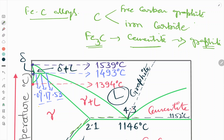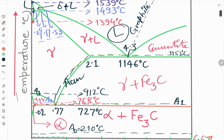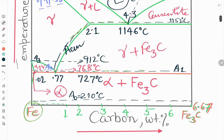The phase diagram shows iron and iron carbide as the two components. In cast iron, carbon is present either as graphite or as cementite. To denote this possibility, the figure has dotted phase boundaries, which represent the corresponding graphite equilibrium.